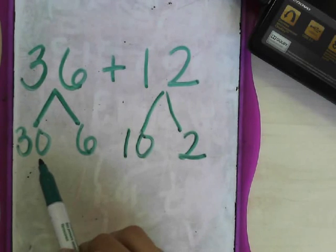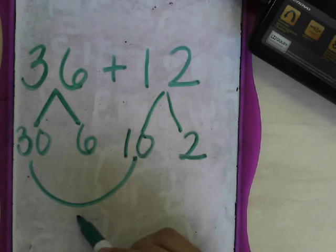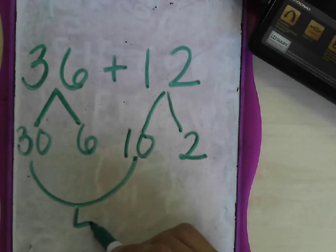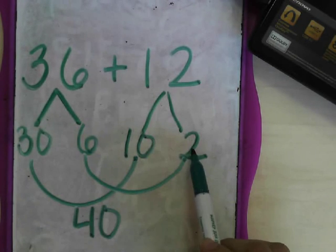We're going to add the tens together. We're going to add the tens columns. So 30 and 10 is 10 more than 30 is 40. We're going to add the ones columns together. 6 and 2 is 8.